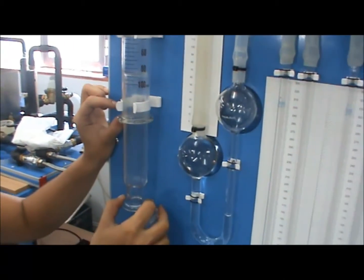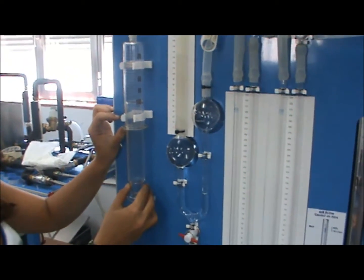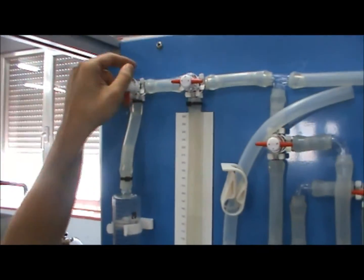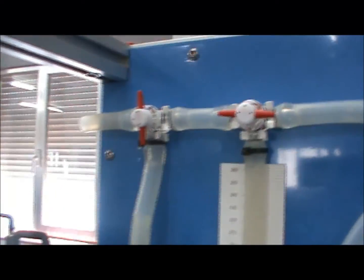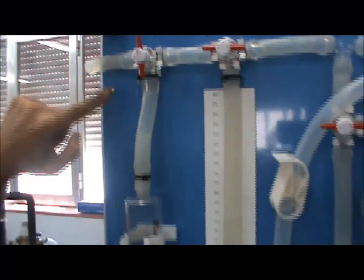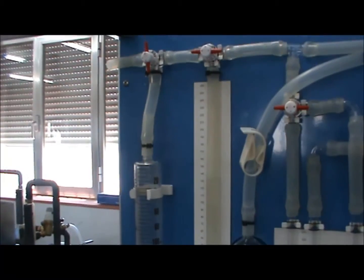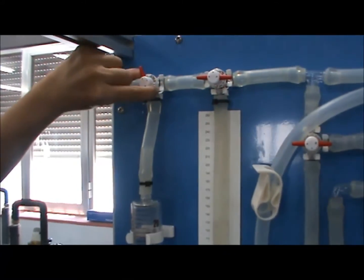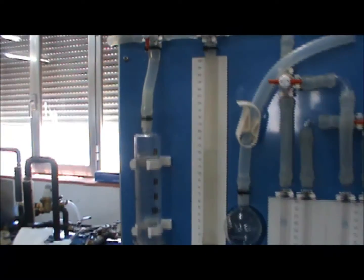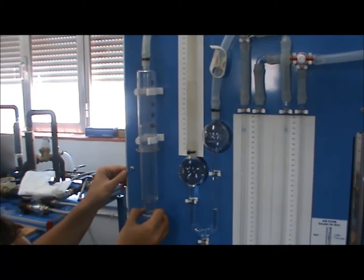Now, push the plunger down, drawing the air mixture from the column into the syringe. Turn valve VT3 to expel the sample to the atmosphere. Repeat these steps five to six times to clear the lines, and to ensure that the sample is representative of the mixture in the column.